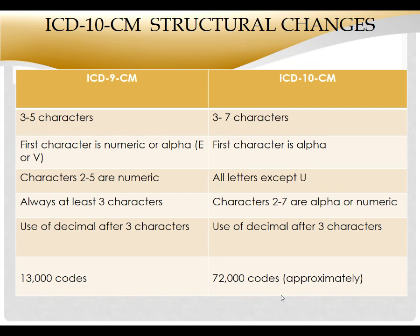In ICD-9, all codes started with a number with the exception of the E and V codes. Now all ICD-10 codes start with a letter. There were two to five numeric characters before; all letters except the U codes come first. You use a decimal after the third alphanumeric code in ICD-10. Previously there were 13,000 codes related to healthcare with ICD-9; now there are more than 72,000 codes.